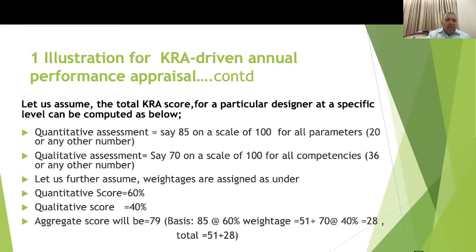For a particular designer at a specific level, assume the quantitative KRA score is 85 on a 100-point scale for 20 parameters, and the qualitative assessment by the superior is 70 on a scale of 100. If the quantitative score carries 60% weight and qualitative carries 40%, the aggregate score is: 85 × 60% = 51, plus 70 × 40% = 28, totaling 79. The person earns an aggregate score of 79 on both quantitative and qualitative assessment combined.